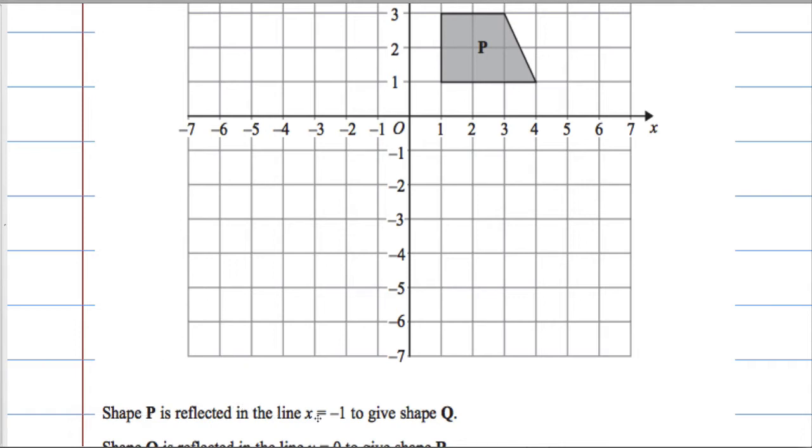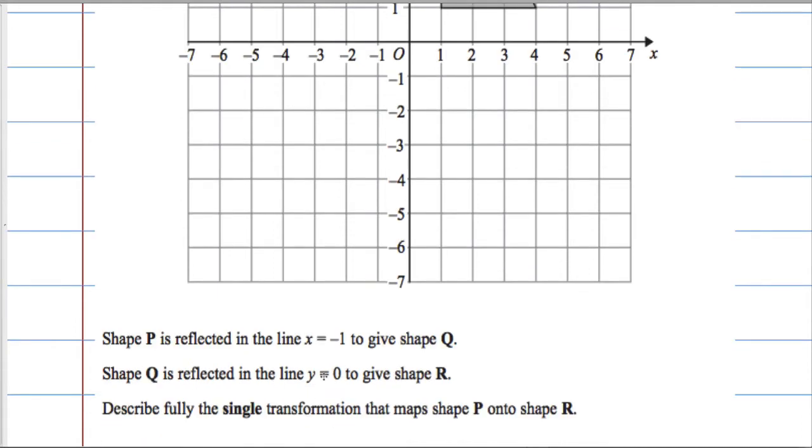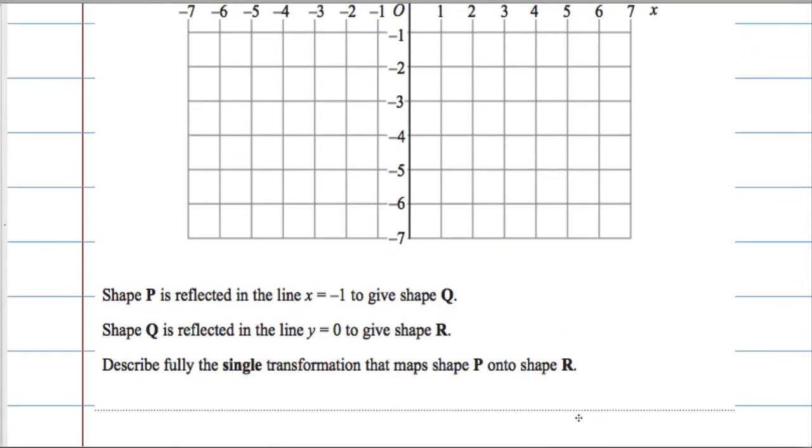Shape P is reflected in the line x = -1 to give shape Q, and then Q is reflected in the line y = 0 to give R. Describe fully a single transformation that maps shape P onto shape R. It's three marks for this.